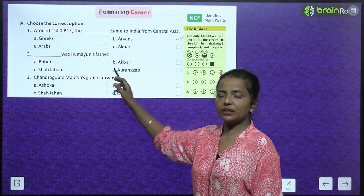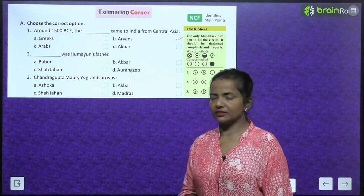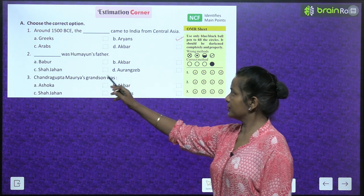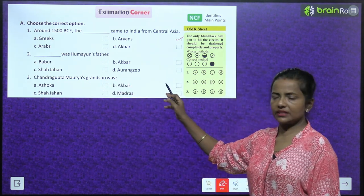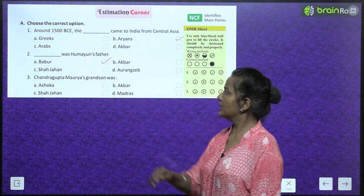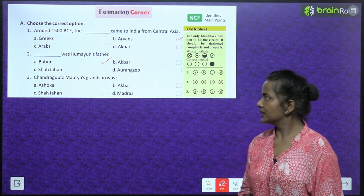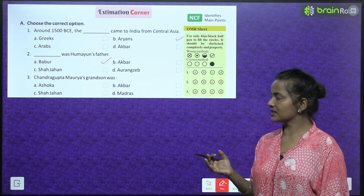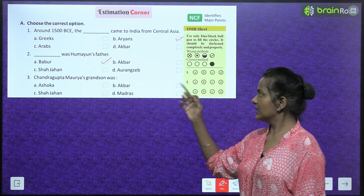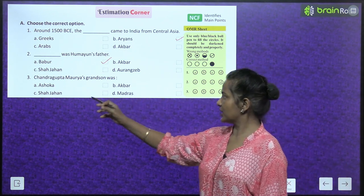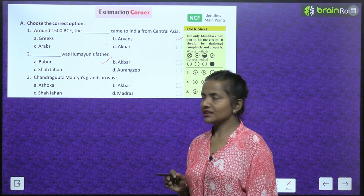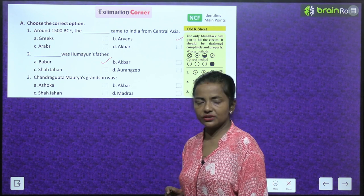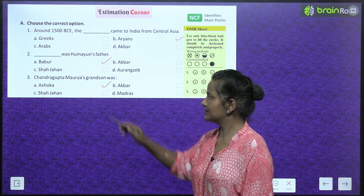Blank was Humayun's father. Options: Babur, Akbar, Shah Jahan, Aurangzeb. Babur was Humayun's father. Chandragupta Maurya's grandson was? Options: Ashoka, Akbar, Shah Jahan, Madras. Chandragupta Maurya's grandson was Ashoka.